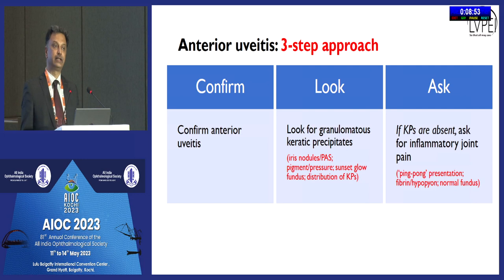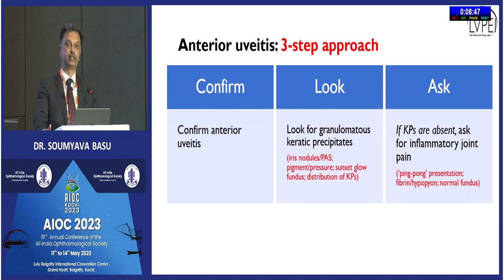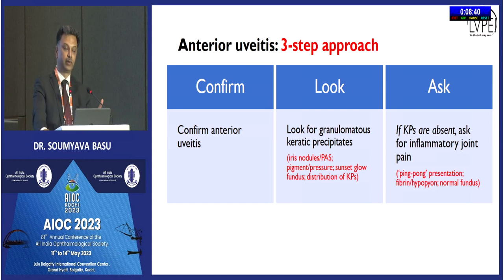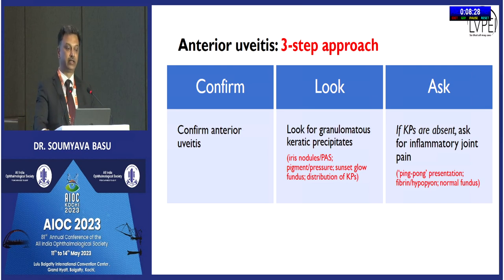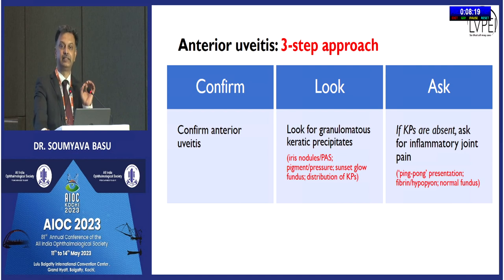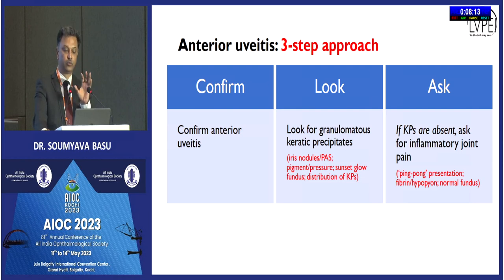I will discuss a three-step approach useful to general ophthalmologists. This is not a comprehensive cover of anterior uveitis but should cover the majority of cases. Step one: confirm you are actually dealing with anterior uveitis. Step two: look for the presence of granulomatous keratic precipitates — those with a volume, not just pinpoints on the endothelium. Step three: if there are no granulomatous KPs, ask for a history of inflammatory joint pain.